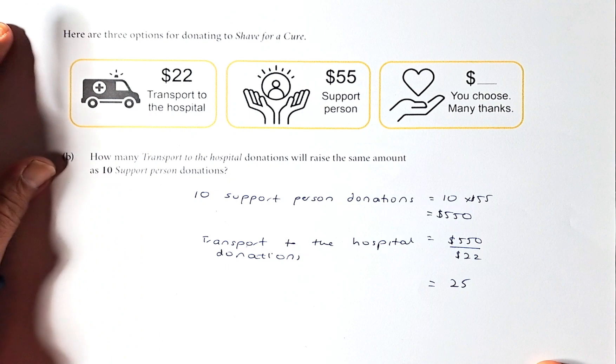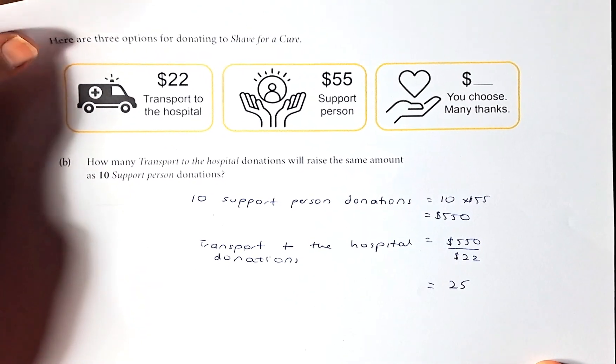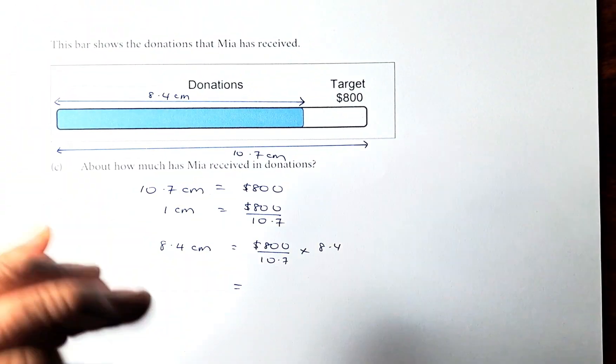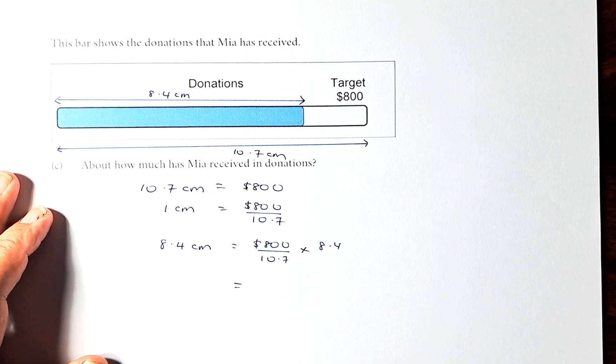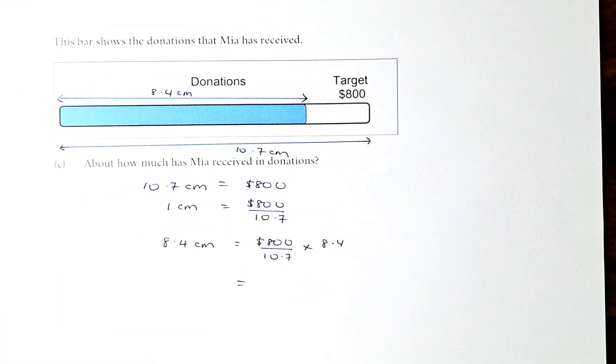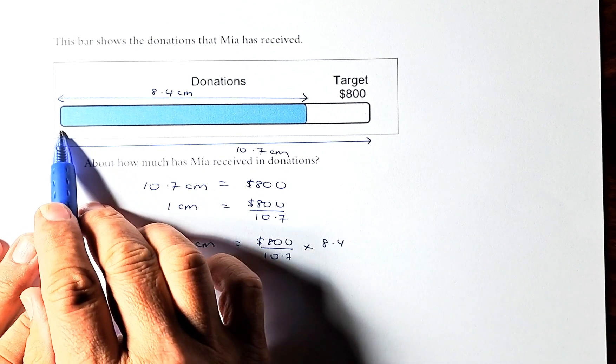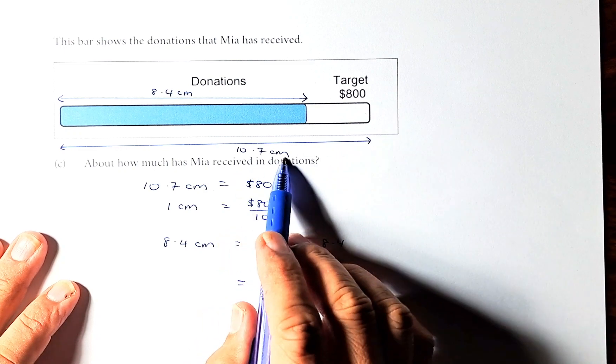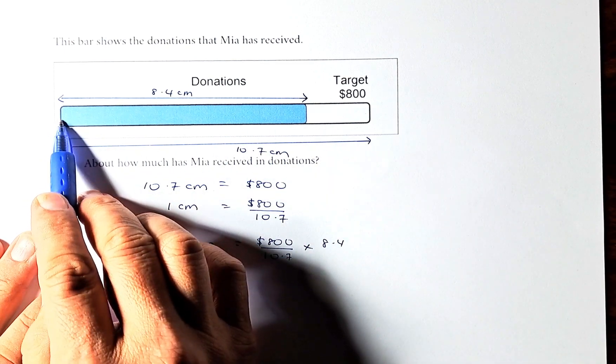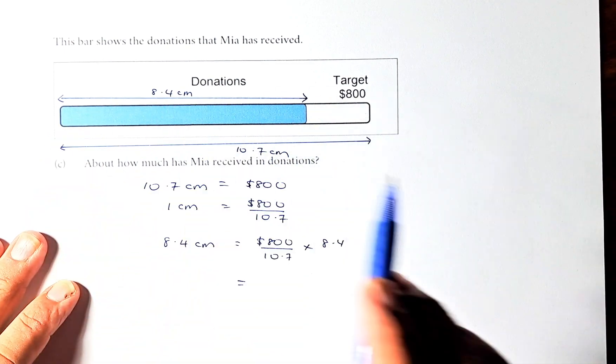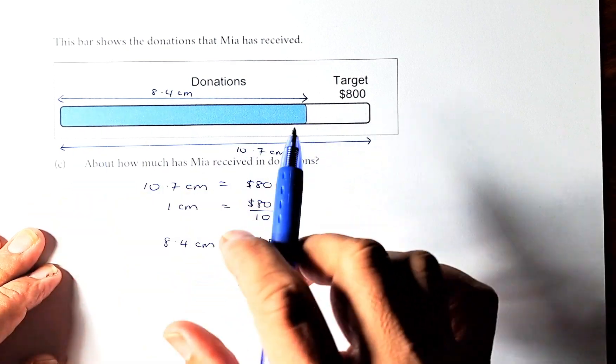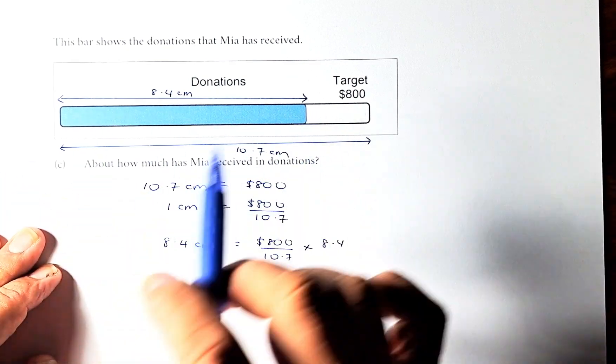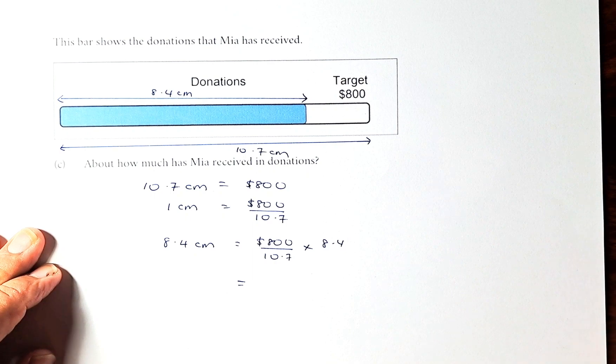Let's now do question 3C. Again, I remind you this is not accurate because I have enlarged the diagram. So you look at the exam paper and you know that the distance from here to the end, the 800 mark is going to be 10.7cm and the point here to the blue point is 8.4cm. Remember this is not correct because this diagram has been enlarged so the measurement is different.